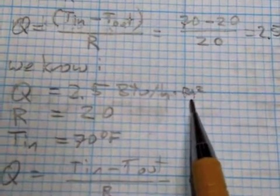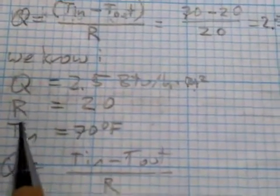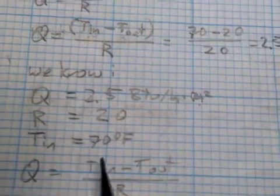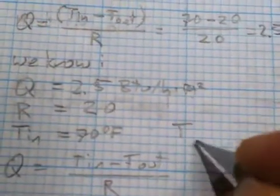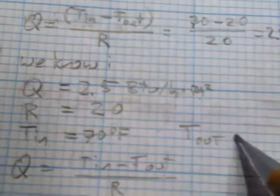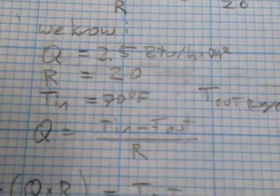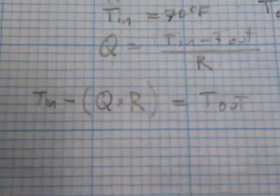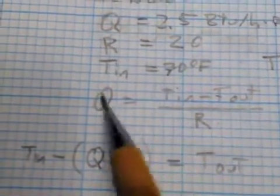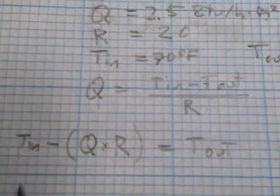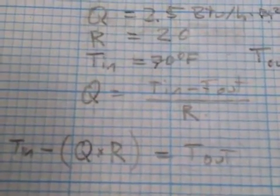So we know Q = 2.5 BTUs per hour per square foot, total R = 20, and inside temperature = 70°F. What we want is the temperature at the outside face of each layer. We use the formula Q = (T_in − T_out) / R, rearranged to T_out = T_in − (Q × R). We multiply by R to isolate it, and subtracting Q × R from the inside temperature gives the temperature at the outside of each layer. We build a table to apply this systematically.